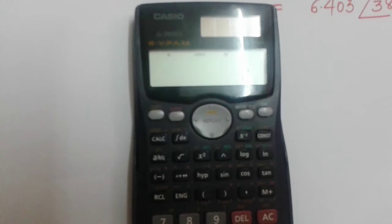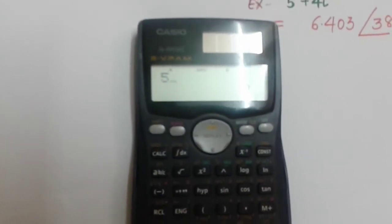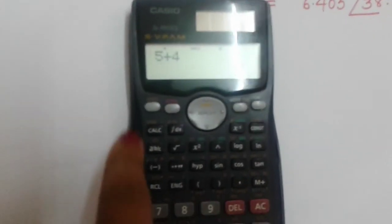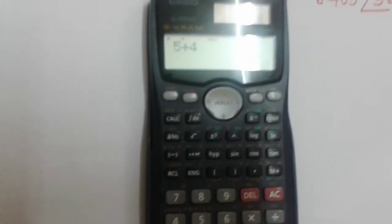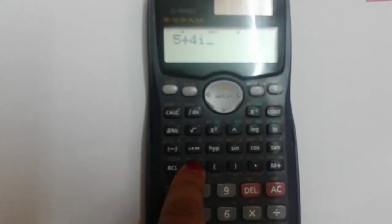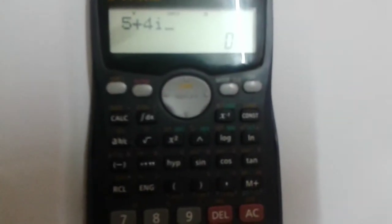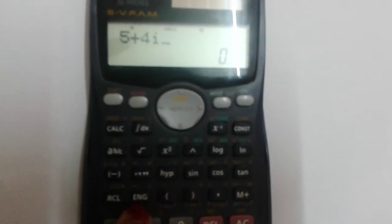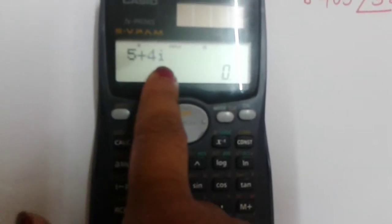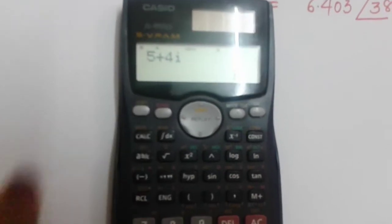I'm having 5 plus 4i. You have to press SHIFT and then the ENG button is there. You can see here, it will come in this form: 5 plus 4i. Then again you have to press SHIFT.